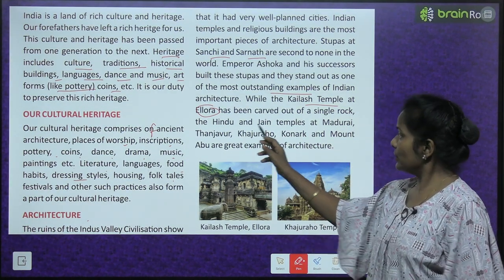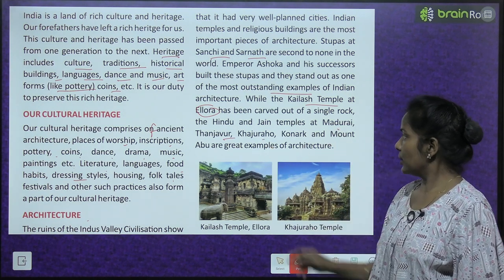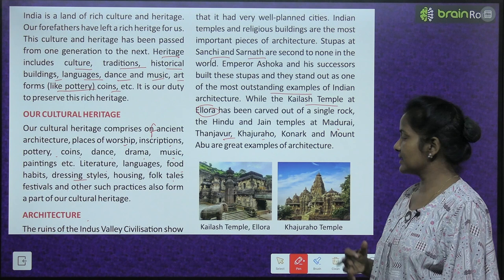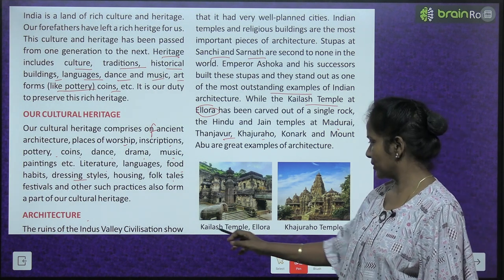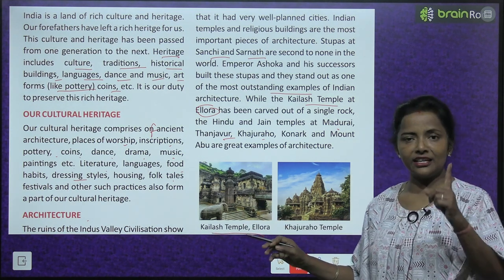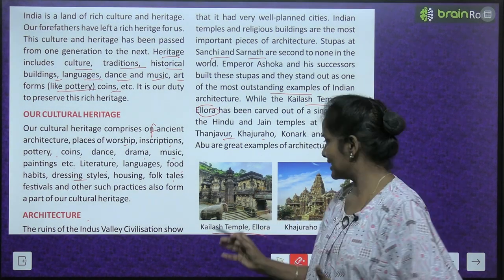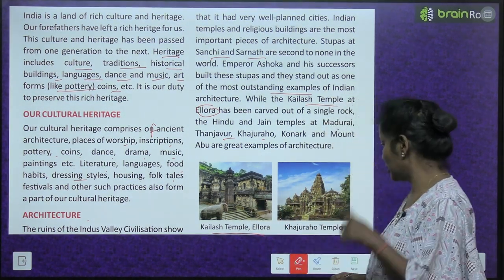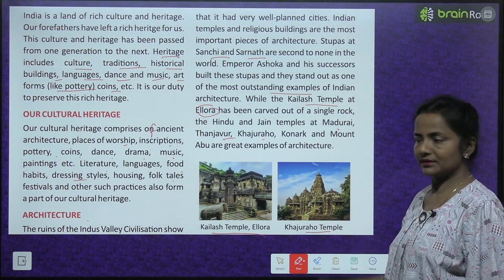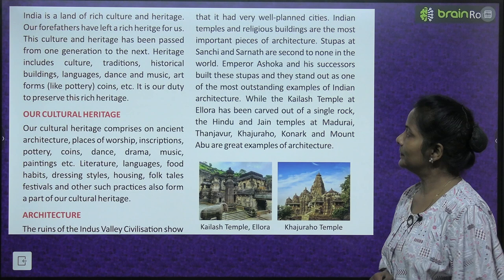The Kailash temple at Ellora has been carved out of a single rock — keval ek hi rock se carving karke yeh Ellora mein Kailash temple banaya gaya hai. The Hindu and Jain temples at Madurai, Tanjavur, Khajuraho, Konark, and Mount Abu are great examples of architecture. And this is the Khajuraho temple — wonderful pieces of architecture.